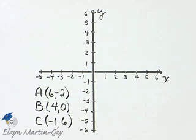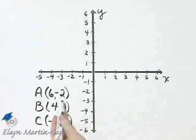Let's plot each of these points and then decide which quadrant each lies in. For example, A is the point with coordinates 6, negative 2.